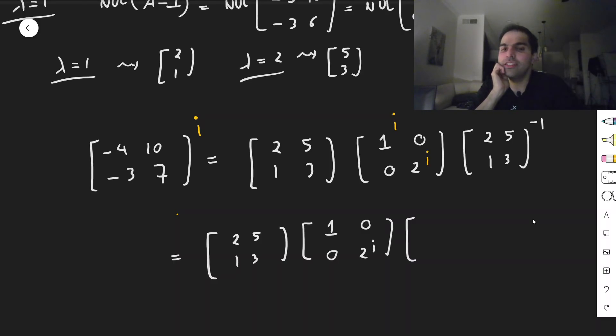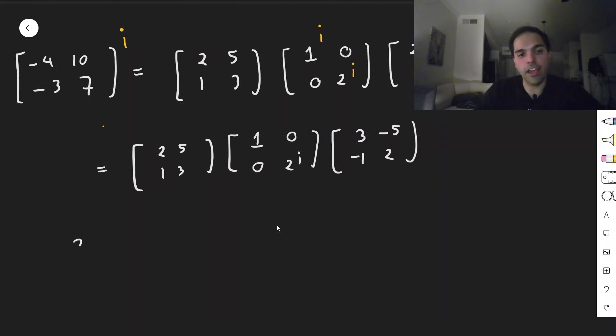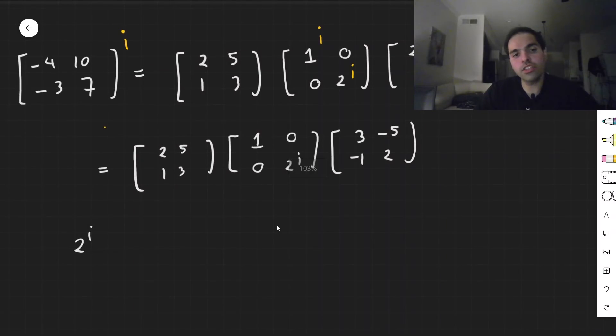Luckily, the determinant is 1, so it's just 3, 2, minus 5, minus 1, which of course raises the question, what is 2 to the i? Well, here's the trick.